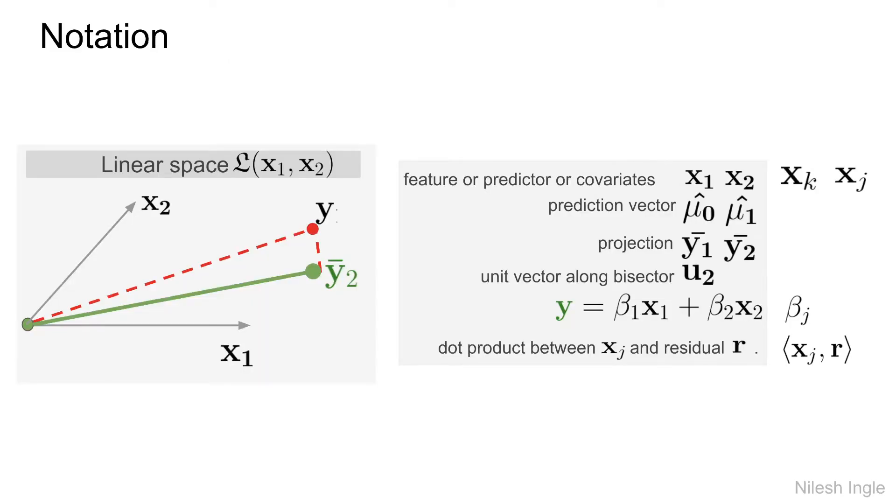Here are a couple of notations before we get into further slides. When we're talking about linear space L(x1, x2), we're imagining there are two predictors or two features, x1 and x2. The area spanned by those two features is denoted by this symbol linear L and in parenthesis x1 and x2. The output or response is y, and when we're projecting that on this linear space, it is denoted by y bar.